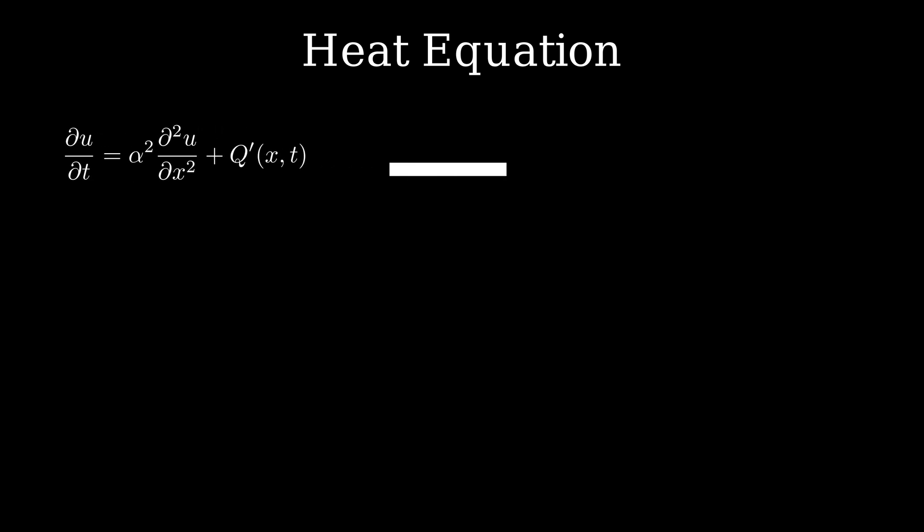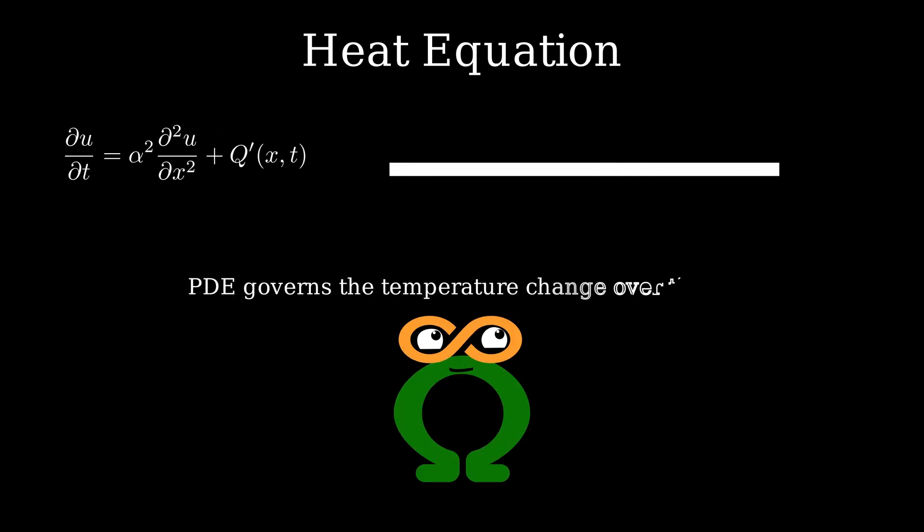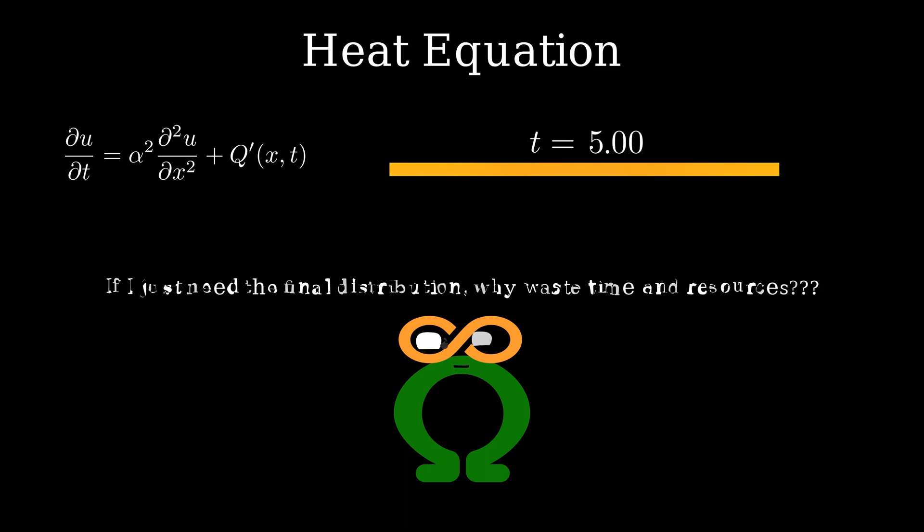If you remember, this equation dictates how the temperature distribution changes over time. When looking carefully, after a certain period of time, the temperature does not change much. What if I only need to find this steady state where the temperature does not change? It would be quite wasteful to run all these iterations.